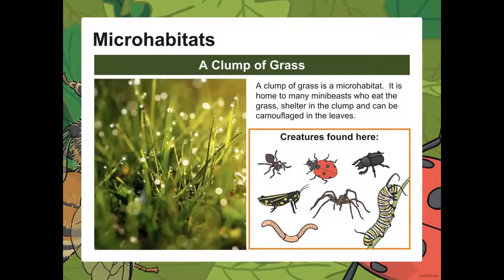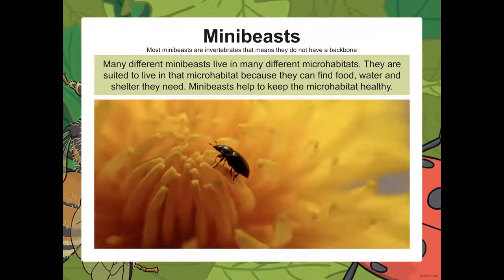A clump of grass is another example of a micro habitat — it is home to many mini beasts that eat the grass, shelter in the clump, and can be camouflaged to protect themselves from predators. Organisms found in a clump of grass include grasshoppers, ants, ladybugs, beetles, caterpillars, worms, and spiders. Mini beasts help keep the micro habitat healthy.